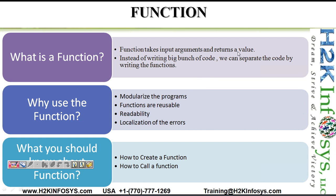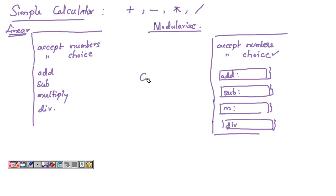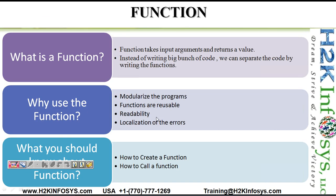A function takes input arguments and returns a result. Instead of writing a big block of code or a linear script, we can separate the code by writing functions. The first advantage is that it modularizes the program — the program is written in a more organized way. We create separate functions for different kinds of operations. These functions are also reusable — once created, a function can be called any number of times.